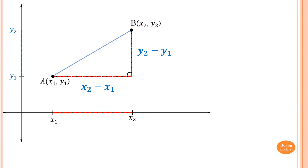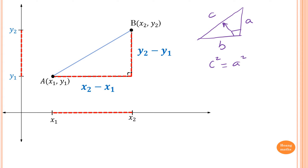Remember Pythagoras' theorem — we have a triangle where the hypotenuse is c, and the two legs are a and b. So c² = a² + b², which means c = √(a² + b²).